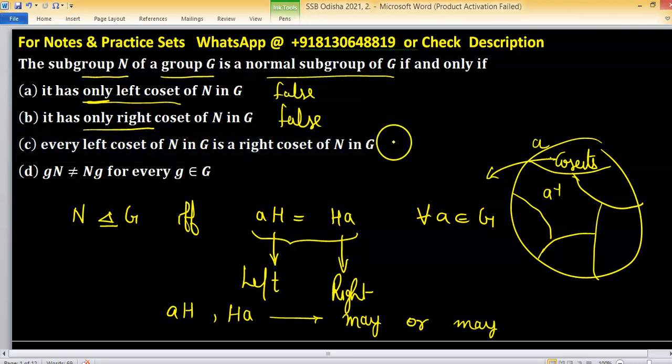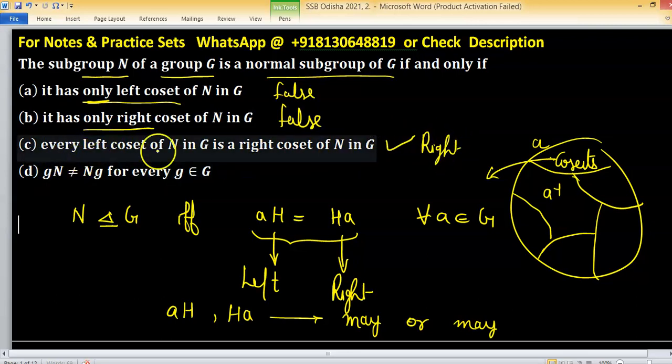According to this one option c will be right. Coset means every left coset of n in G is right coset of n. So sometimes many book writers write only cosets when they deal with normal subgroups, because coset means left coset and right coset becomes same.